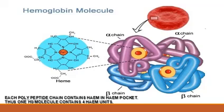The two types of chains present in the hemoglobin molecule are the alpha chain and the beta chain. If you look at the structure, the structure of hemoglobin can be represented as alpha 2 and beta 2.